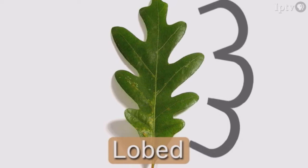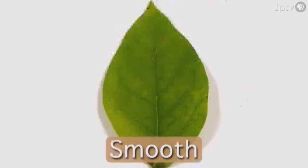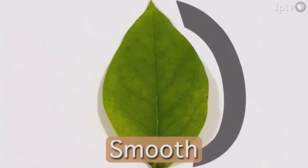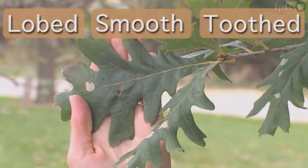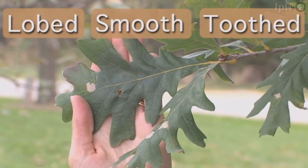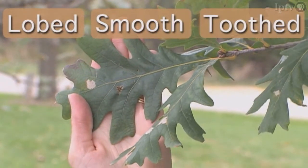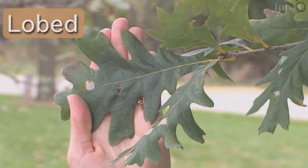The next question in the key refers to the leaf margin. The leaf margin is just the edge of the leaf. This is an example of a lobed leaf. This is an example of a smooth leaf. This is an example of a toothed leaf. So take a look at our tree. Is this leaf lobed, smooth, or toothed? It is lobed.